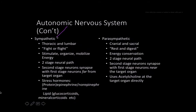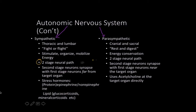For the autonomic nervous system, there is the sympathetic and parasympathetic. The sympathetic — thoracic and lumbar — is colloquially referred to as the fight-or-flight response: fight for your life or run for your life, requiring a lot of mobilization of energy. It has a two-stage neural path where second-stage neurons synapse with first-stage neurons located far from the target organ.